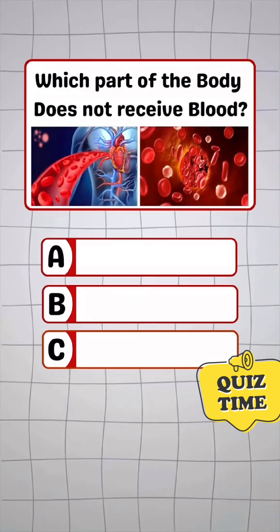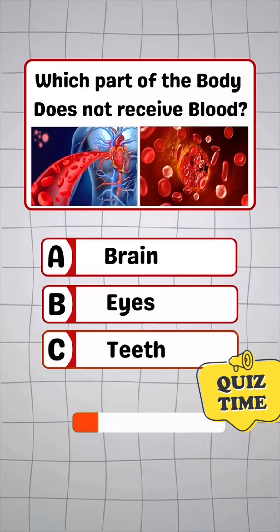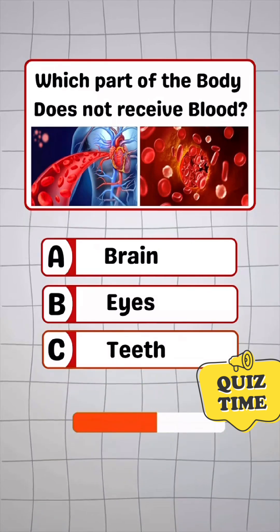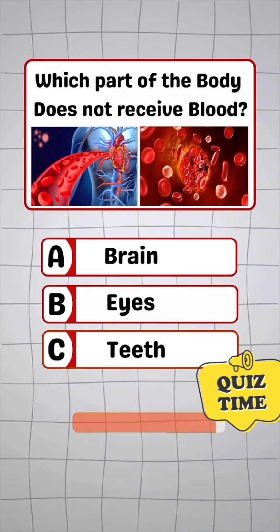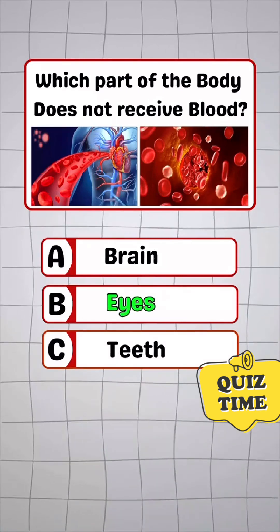Question 7. Which part of the body does not receive blood? Answer B: Eyes.